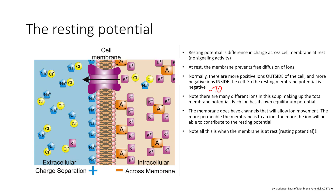There are many different ions making up the total membrane potential, and each of these ions has its own equilibrium potential — that's another key term. The equilibrium potential is the potential at which each particular ion is most happy based on the electrochemical gradient, which is composed of the concentration gradient and the electric gradient.